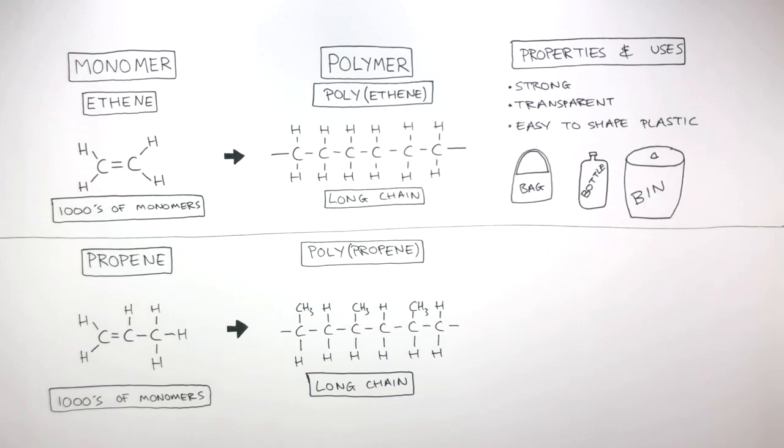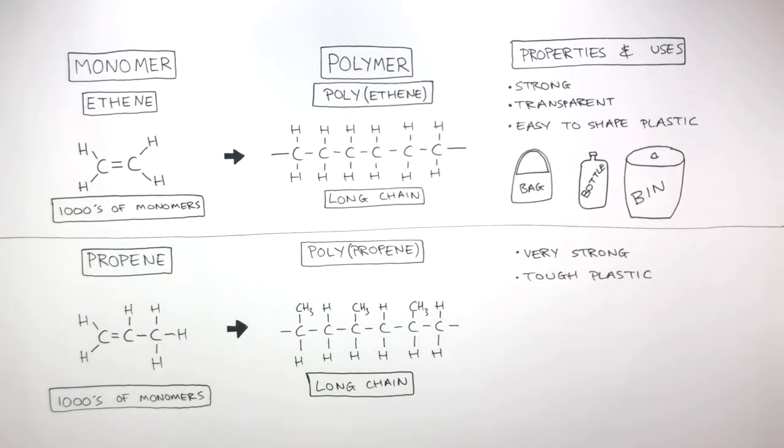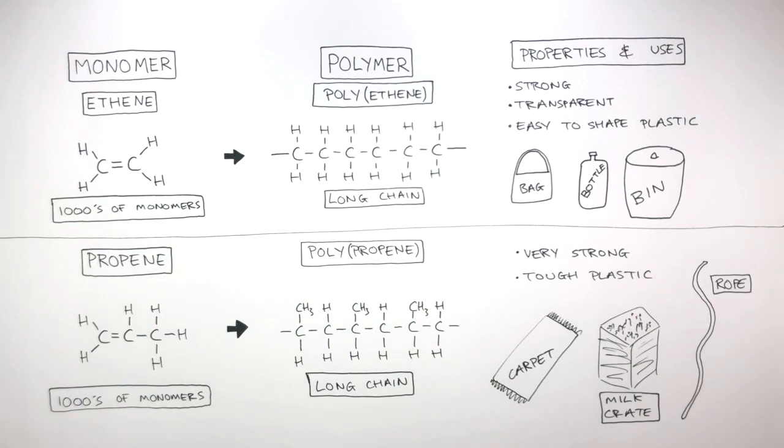And the properties of polypropene is that it is very strong, it's a tough plastic, so it can be used as carpets, to make milk crates, and to make ropes.